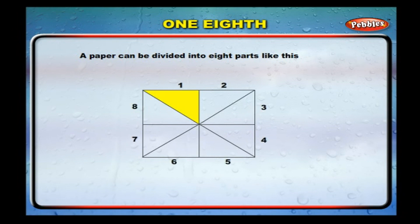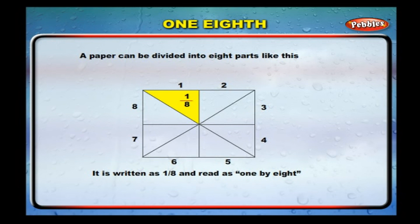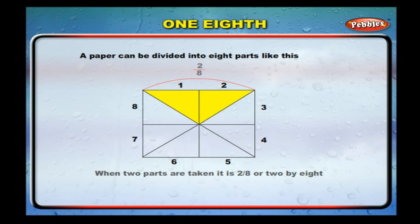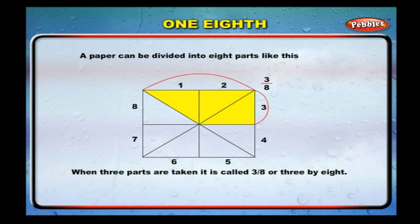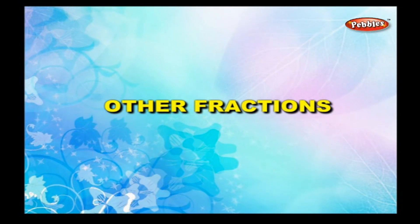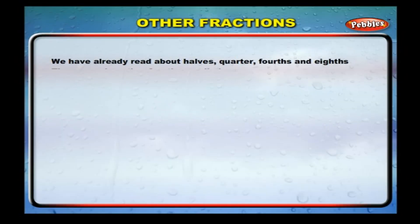One-eighth: a paper can be divided into eight parts. When one part of the eight parts is shaded, it is called one-eighth. It is written as 1/8 and read as one by eight. When two parts are taken, it is 2/8. When three parts are taken, it is called 3/8.